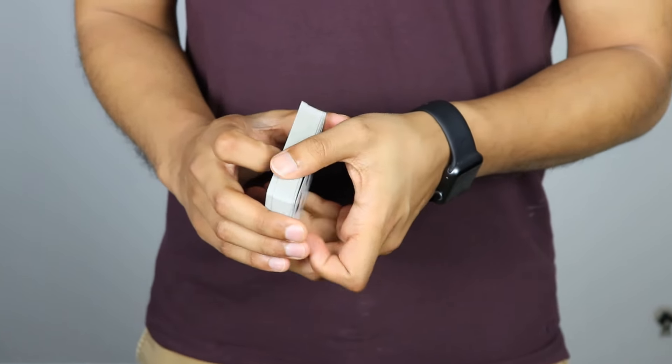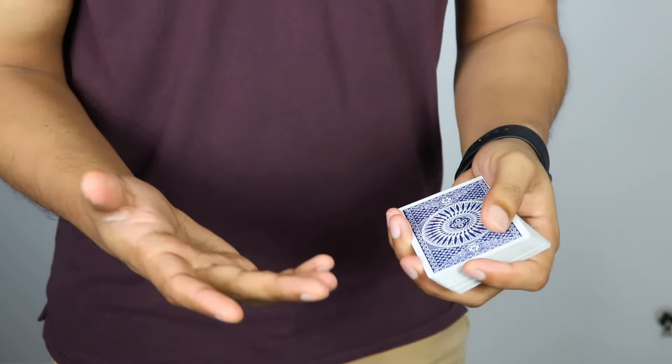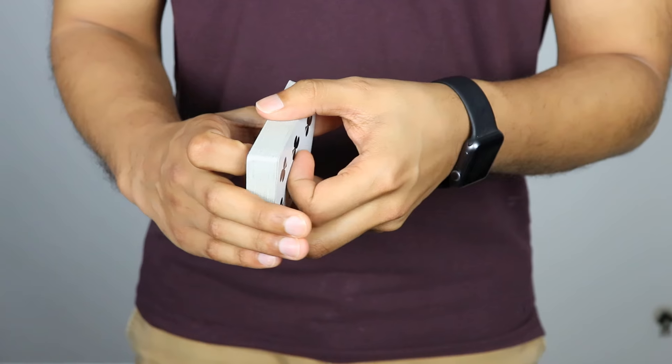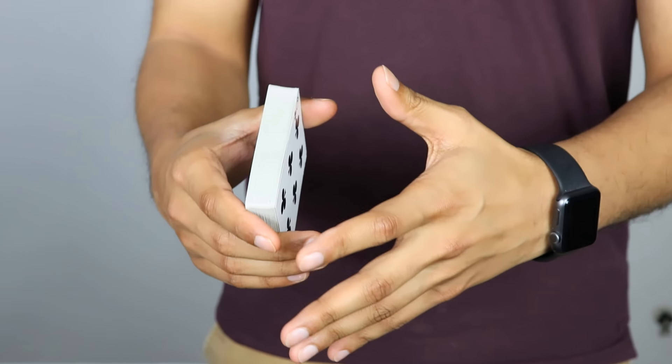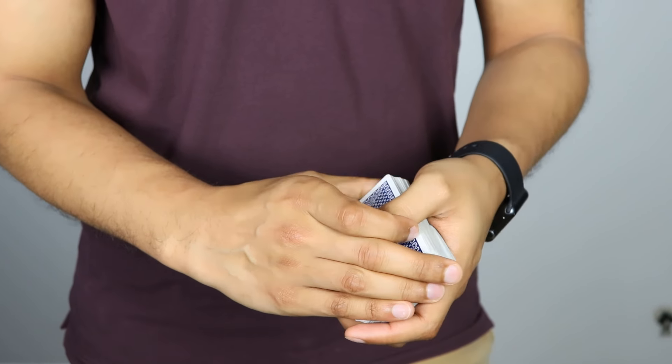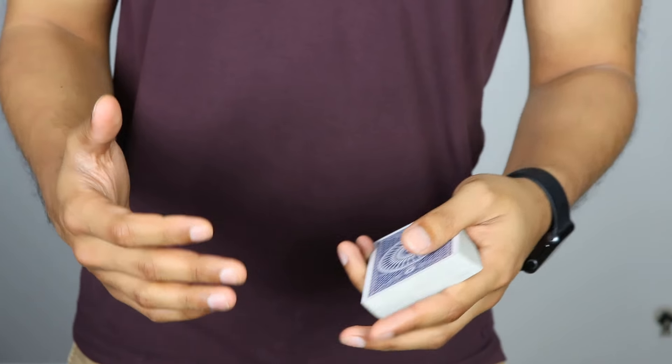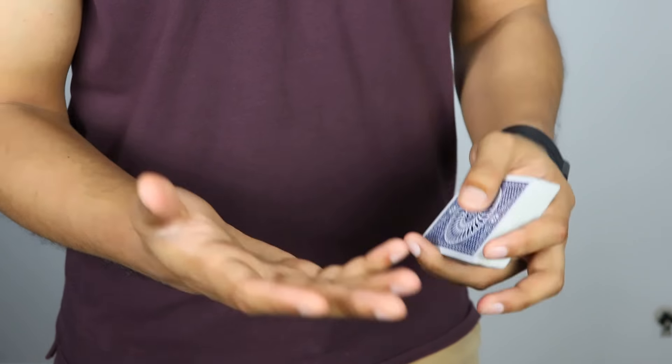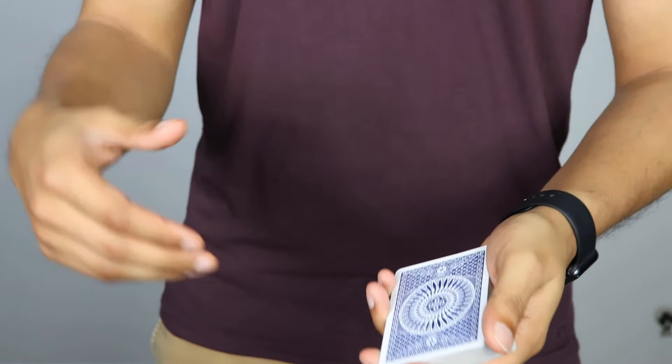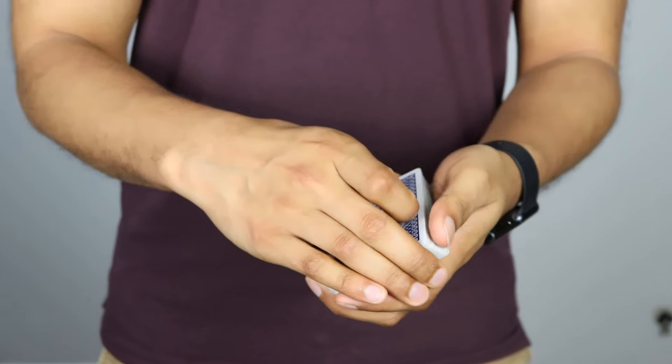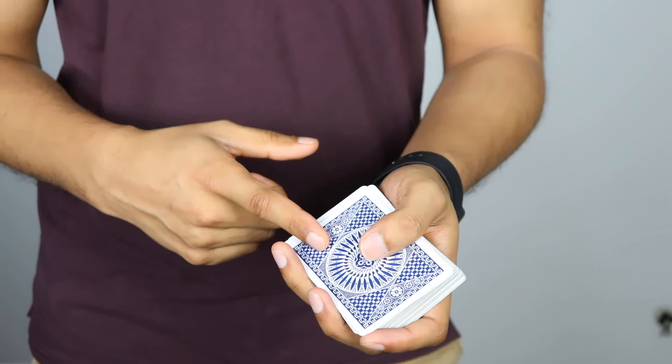But the thing is, the way that Paul Wilson taught it in the World of Warcraft, Card Magic, is he said the main thing you should focus on is not the speed on which you do the pass. But you should focus on shifting the spectator's attention so they're not constantly just staring down at the deck and finding the right opportunity to perform the pass.